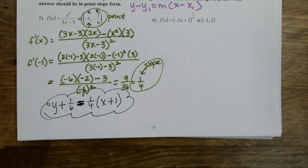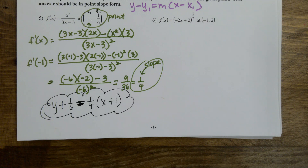Y minus y1 equals the slope times x minus x1. You see why I like this form so much? It's so easy — you just plug it in. You don't have to find your y-intercept or anything like that. I have a point, I find the slope, I plug it into that equation.